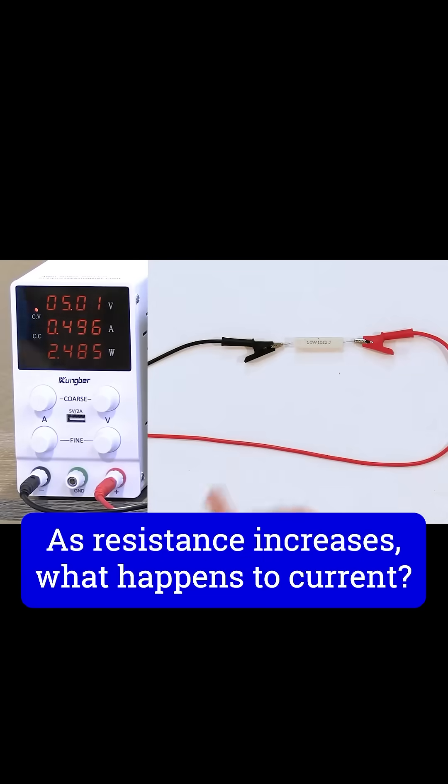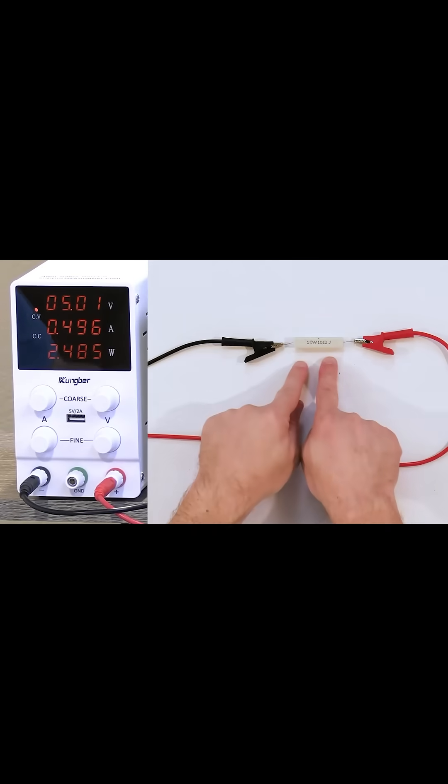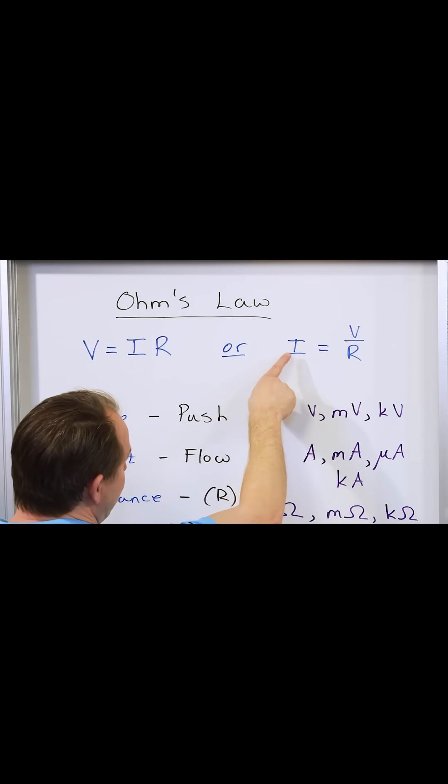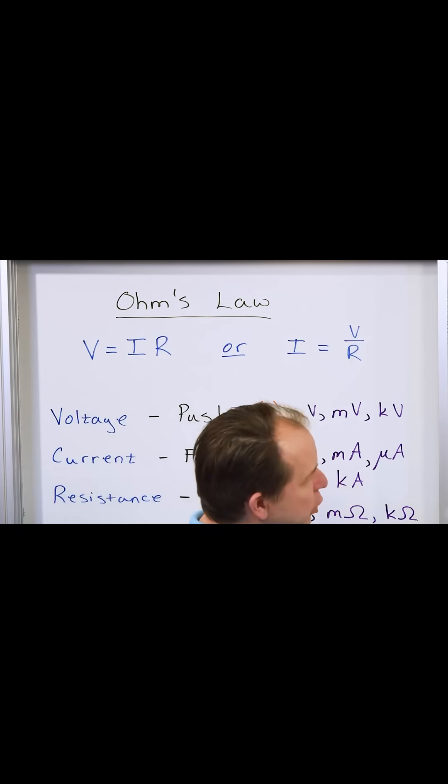If I were to change this resistance, what would happen to the circuit? Well, the voltage is set at 5.01. That would be the same. But if I change the resistance, it would be like changing this number here, and the electric current flowing would change in accordance with Ohm's law.